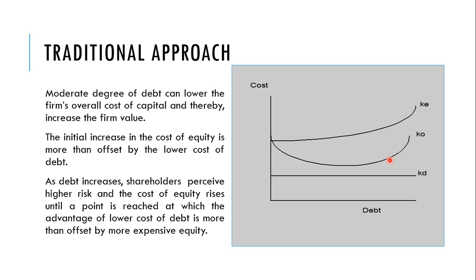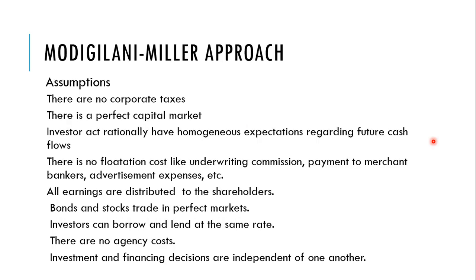The Traditional approach sounds more practical because beyond a certain level, cost of equity rises very steeply as debt becomes excessive, and the cost of debt can no longer compensate for it. So the cost of capital becomes comparatively much higher. These three theories debated whether there is an optimal capital structure or not.